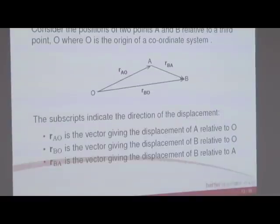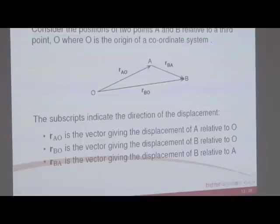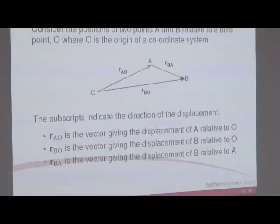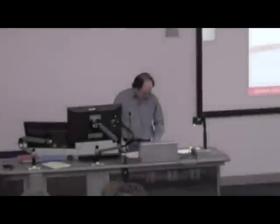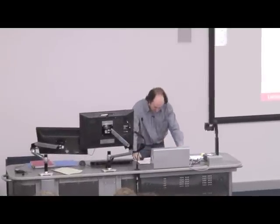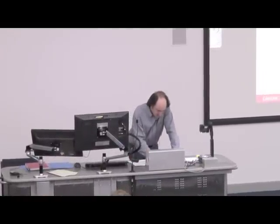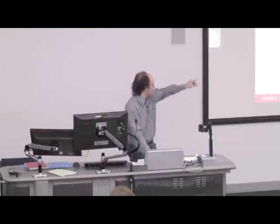In your notes on page 9, slide 14, there is an equation that says R B equals R A plus R A-A-B. That last term should be R B-A. I've made the classic mistake of putting them the wrong way around. So the corrected equation should have R B-A at the end.